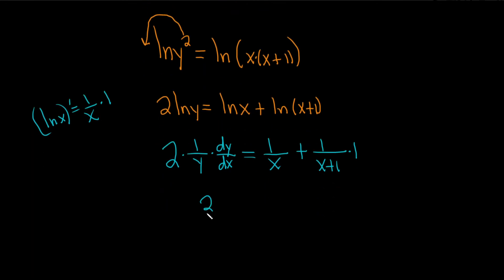So this is really 2 over y, dy dx, equals 1 over x, plus 1 over x, plus 1.